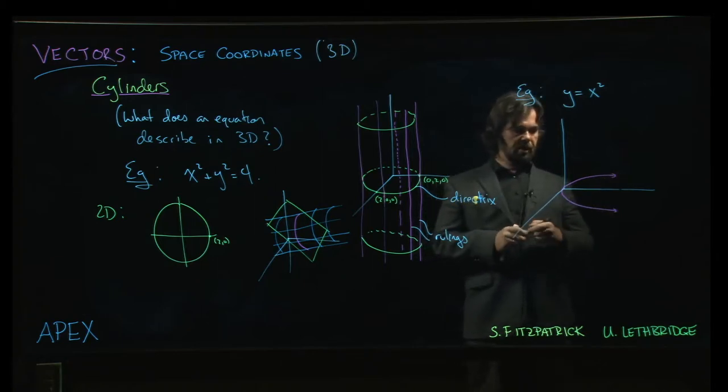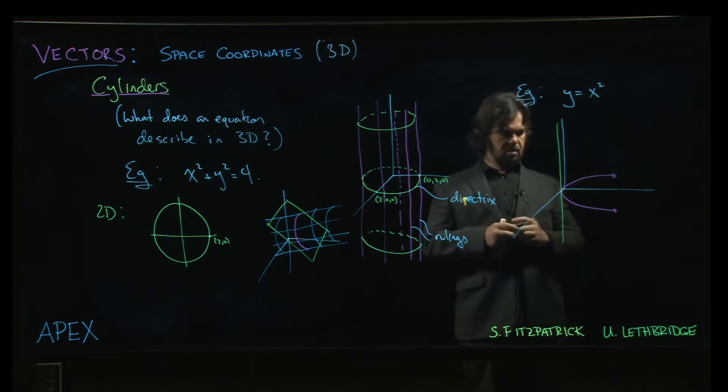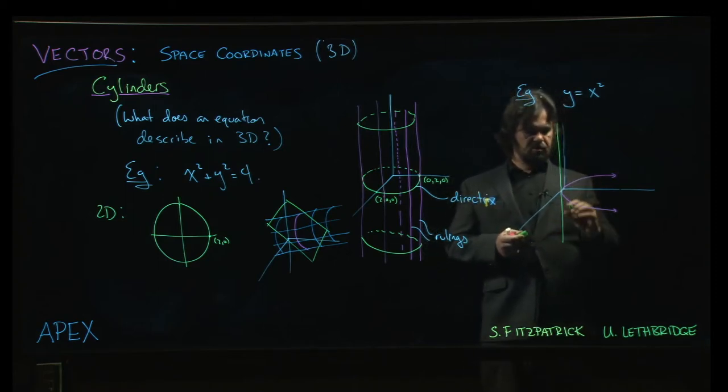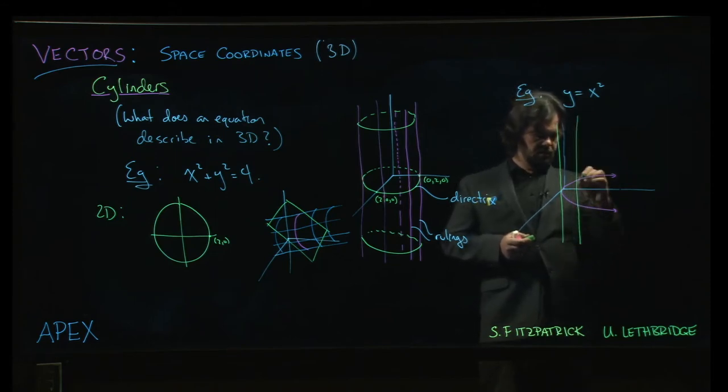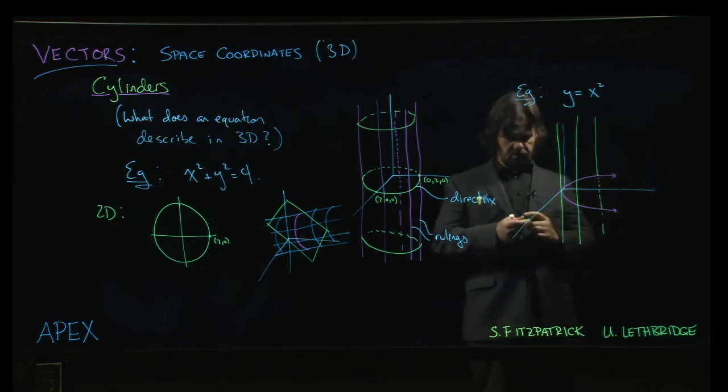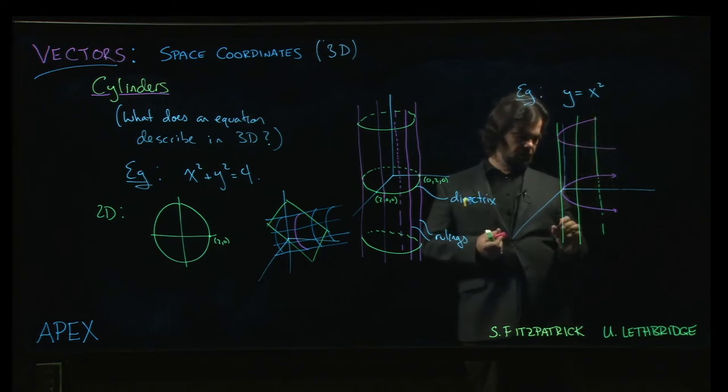And now we can draw the rulings passing through that curve. So kind of going up, I guess that should be, it's not a perfect drawing. Imagine that that is the z-axis. Sketching these things is not an exact science. But you can kind of imagine drawing a few of those, and drawing a couple more of the cylinder shapes to sort of give that idea of what the surface looks like.